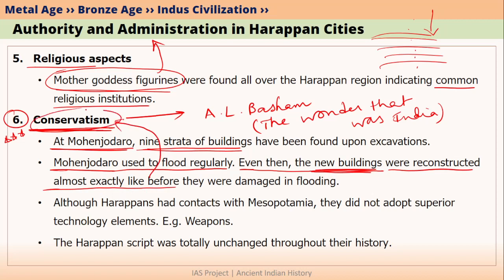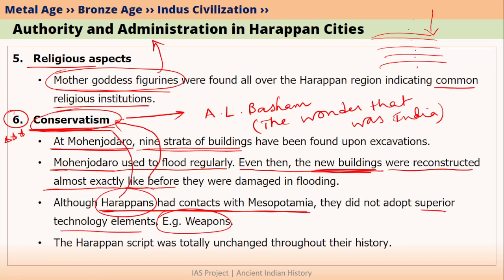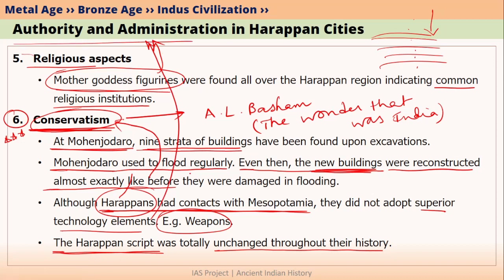Such behavior is called a conservative nature or conservatism. Moreover, we know Harappans had contacts with Mesopotamia, and in certain aspects of culture, Mesopotamian people were far more advanced — for example, their bronze and copper weapons were far superior compared to Indus civilization weapons. Even after having contacts with Mesopotamians, Harappans did not try to adopt this superior weapons technology. The Harappan script also remained practically unchanged throughout their history. There was some kind of authority, administration, or government maintaining stability in Harappan society.